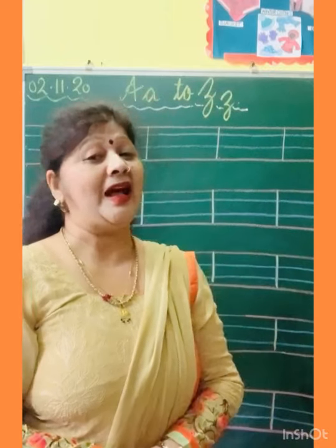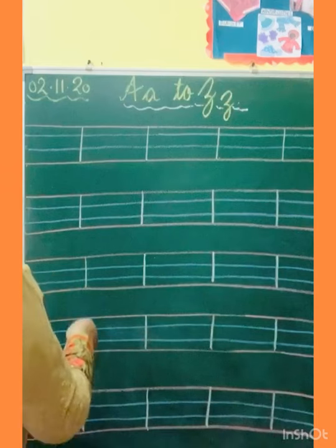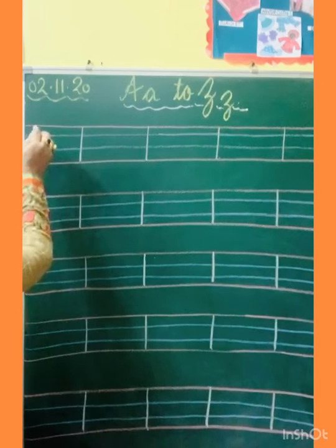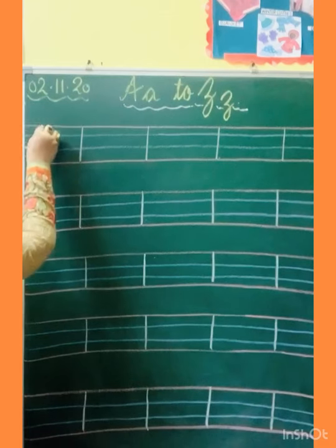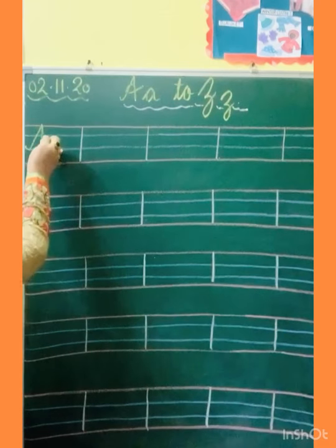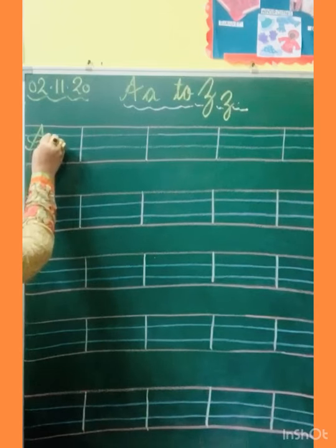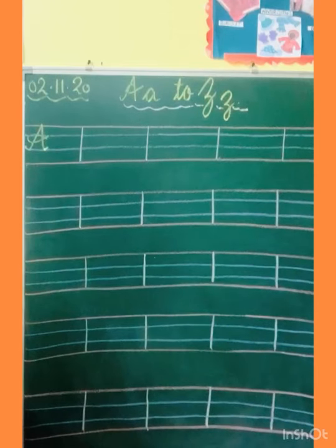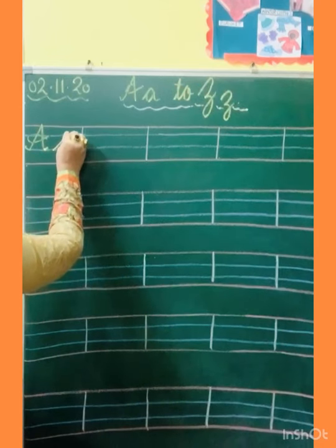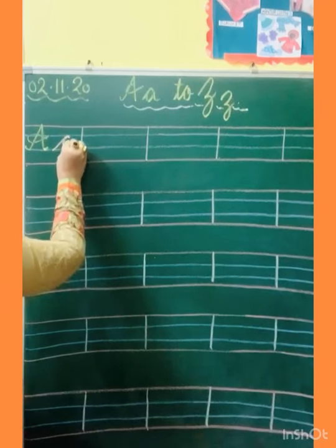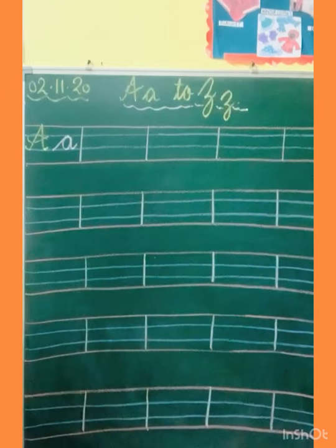We start with letter A. How to write capital cursive A? Touch the third line. Slanting line, go up, come down, and kick. In the second line, make an oval shape and kick. This is capital A. And now small A: slanting, make a curve, go up, come down, and kick. This is small A.